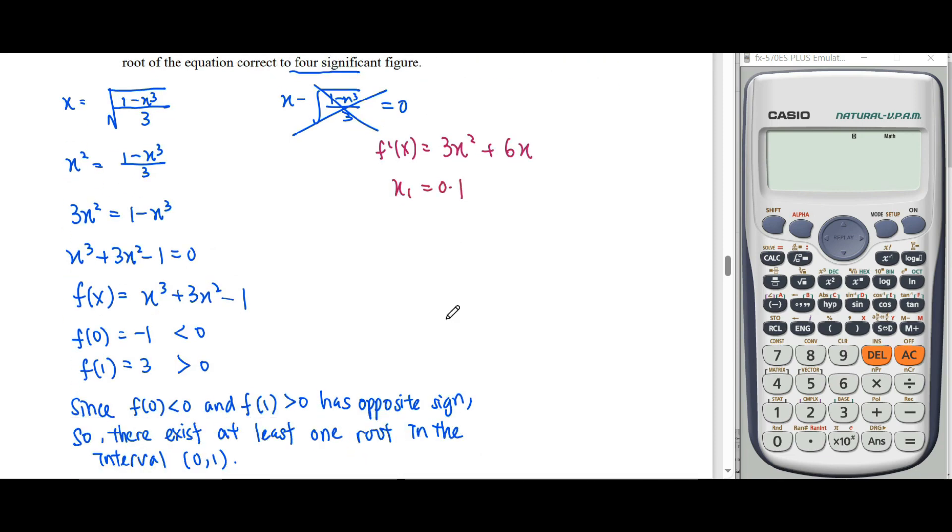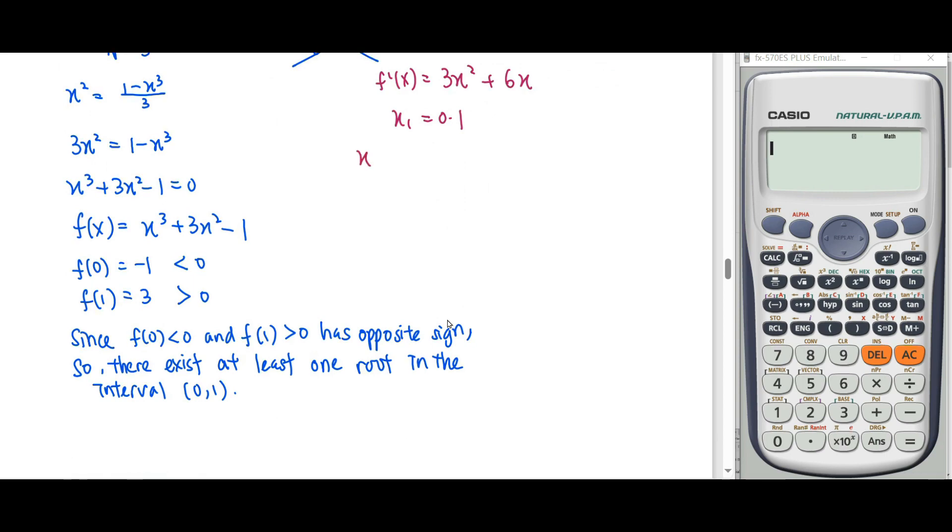The working must be in full: x_{n+1} = x_n - f(x_n)/f'(x_n). We input the formula in the calculator: alpha - (alpha³ + 3alpha² - 1)/(3alpha² + 6alpha), where alpha represents x_n.